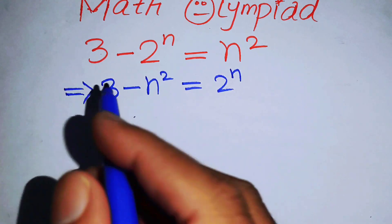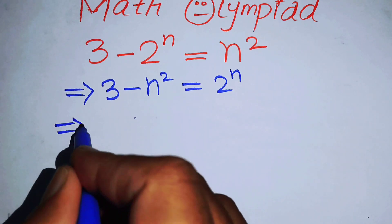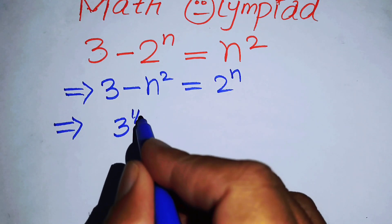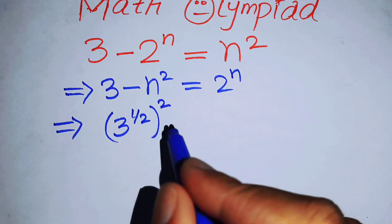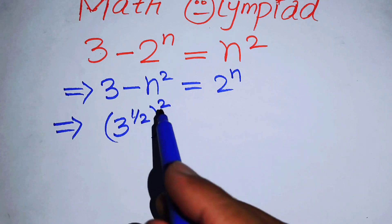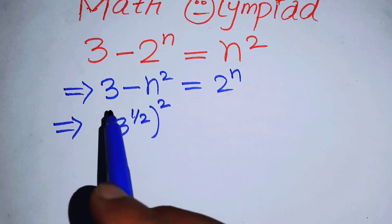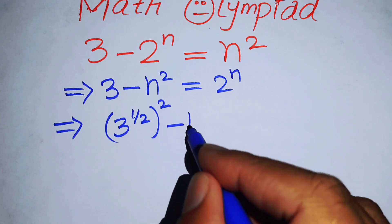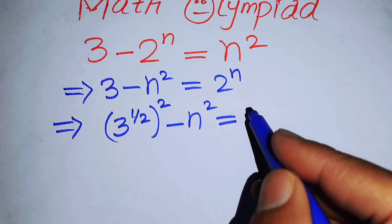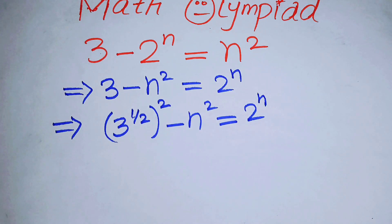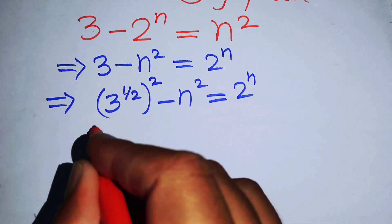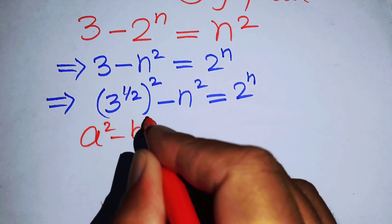Now in the next step we will make a simplification on the left hand side. We can write 3 as 3 to the power of 1/2, whole squared, because when we multiply the two exponents, the 2 cancels and we again get 3. So we write 3 in this form, and we have minus n squared equals 2 to the power of n. Now focus on the left hand side — we have an a squared minus b squared form.